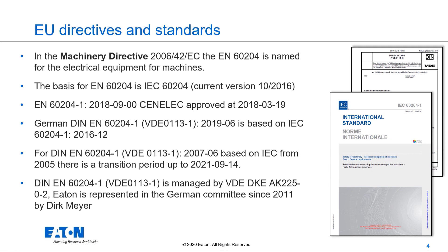In the Machinery Directive of the European Union, EN 60204 is named for the electrical equipment for machines. The basis for the European version EN 60204 is the international version IEC 60204. The current version of this IEC is from October 2016. The German version DIN EN 60204-1, also called VDE 0113-1, is based on this IEC version and was published in June 2019.